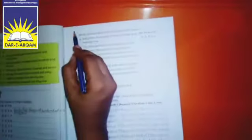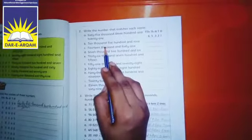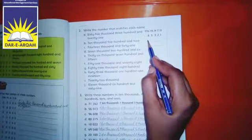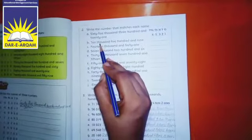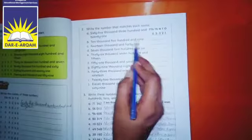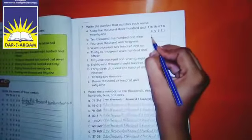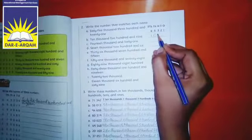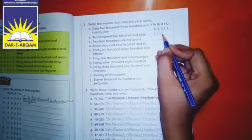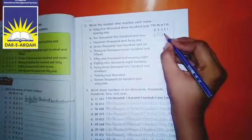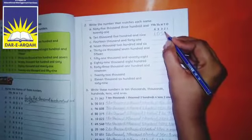Now come to page number eleven. Write the date on the top of the page. Now the number names are present, you write the numbers here. Ten thousand five hundred and nine. So what do we write? Ten thousand, five hundred. The number in hundreds is five hundred and nine. The tens position is empty, so five hundred and nine.